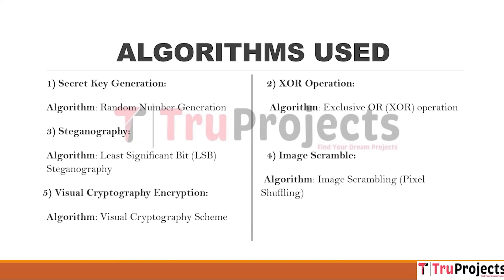The XOR operation is applied to the user's input message and the generated secret key, serving as part of the encryption process to encrypt the input message. Third, for steganography, the Least Significant Bit (LSB) steganography algorithm is used. The encrypted message obtained from the XOR operation is embedded or hidden within an image by modifying the least significant bit of each pixel. For image scrambling, pixel shuffling is used to jumble the pixels of the image and introduce additional complexity for enhanced security.